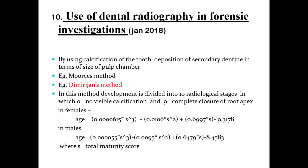The use of dental radiography in forensic investigations includes methods such as Murray's method and Demirjian's method for age estimation. Gustafson's method uses calcification of the tooth, deposition of secondary dentin in terms of the pulp chamber. The Demirjian's method evaluates age for female and male based on completion of root apex or calcification observed across 10 stages.